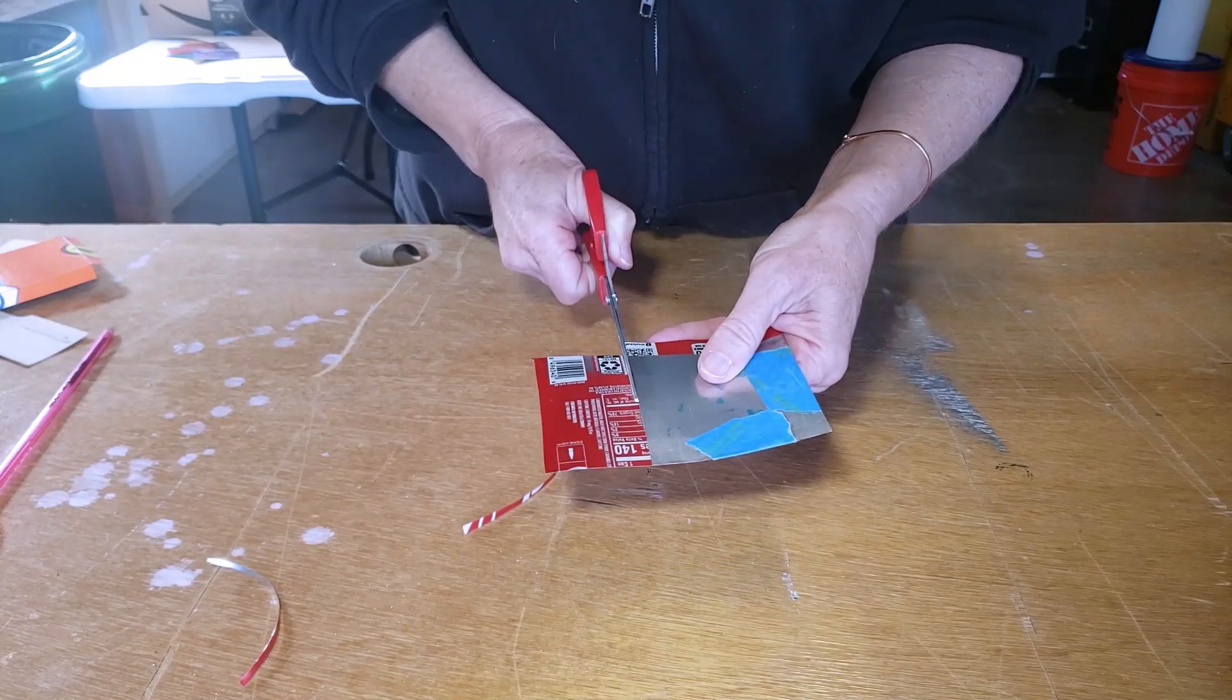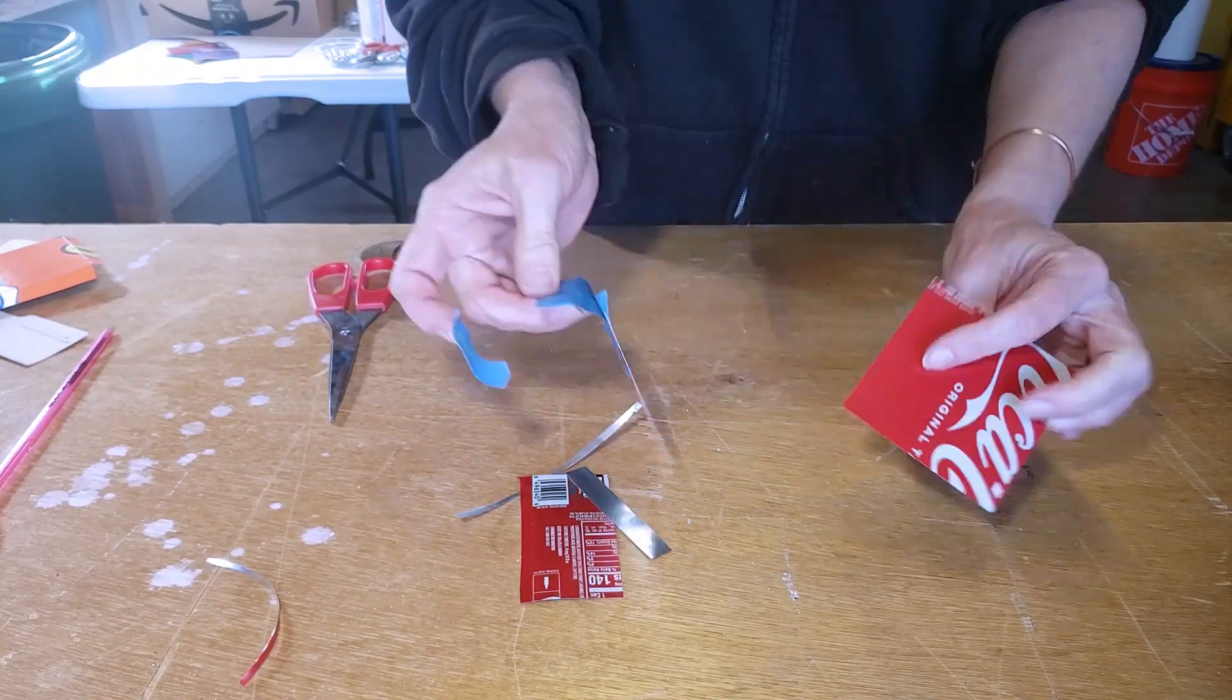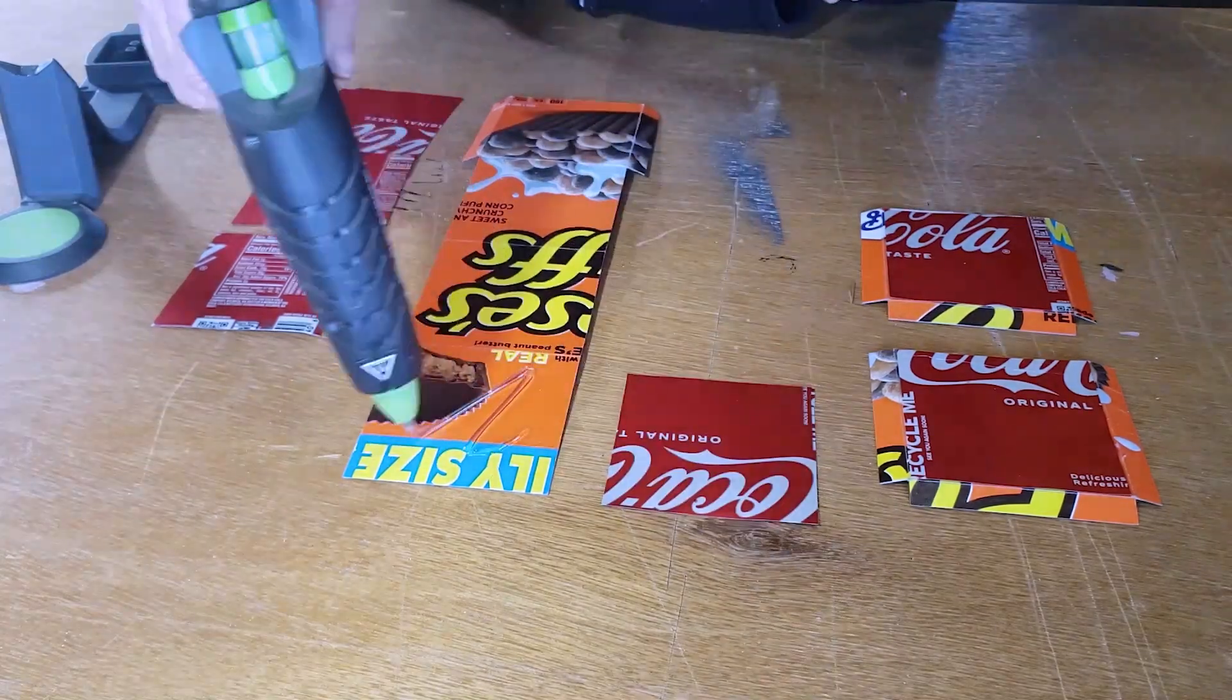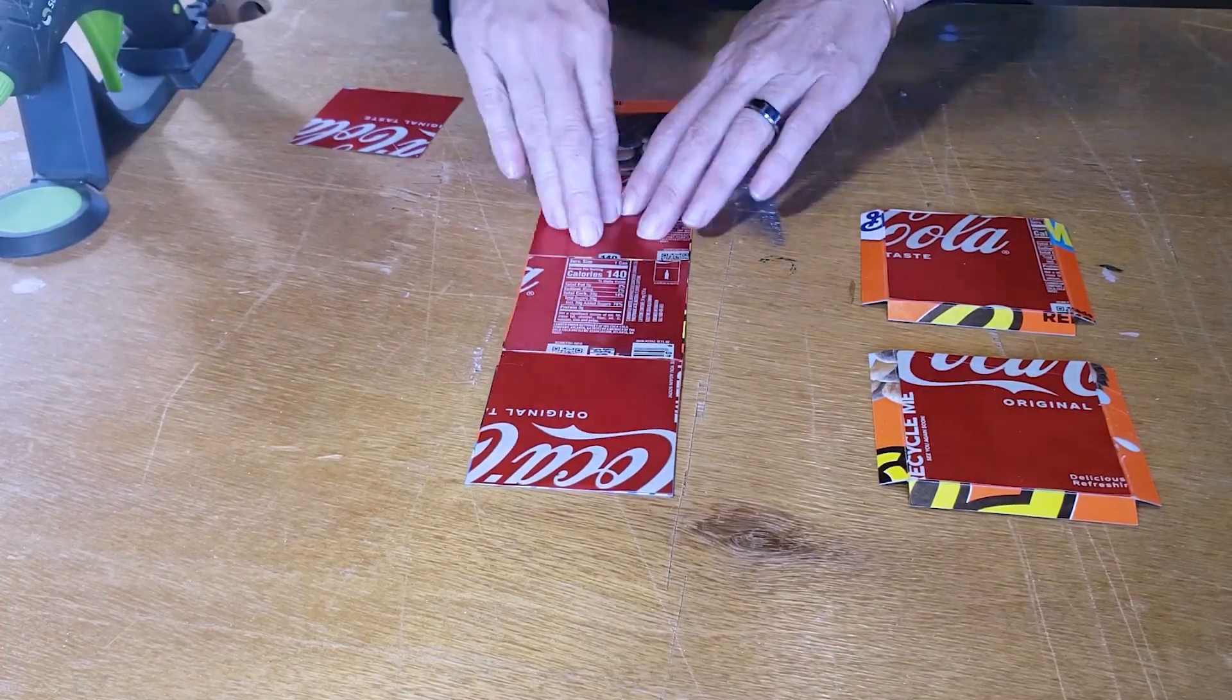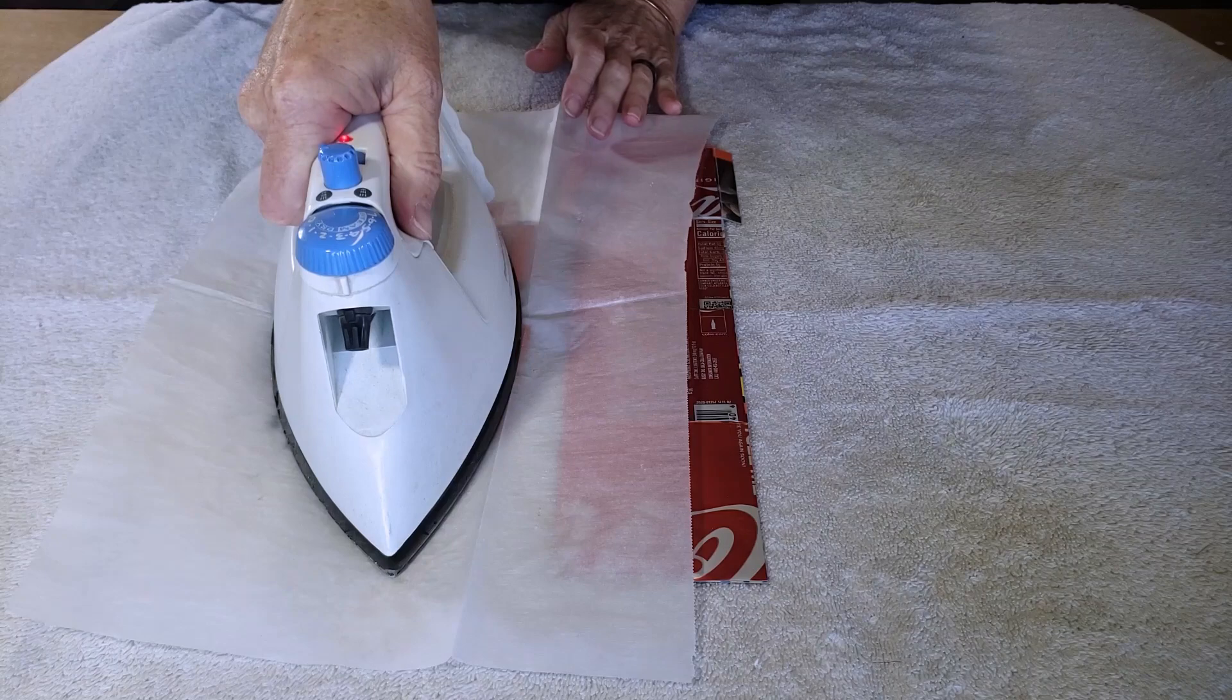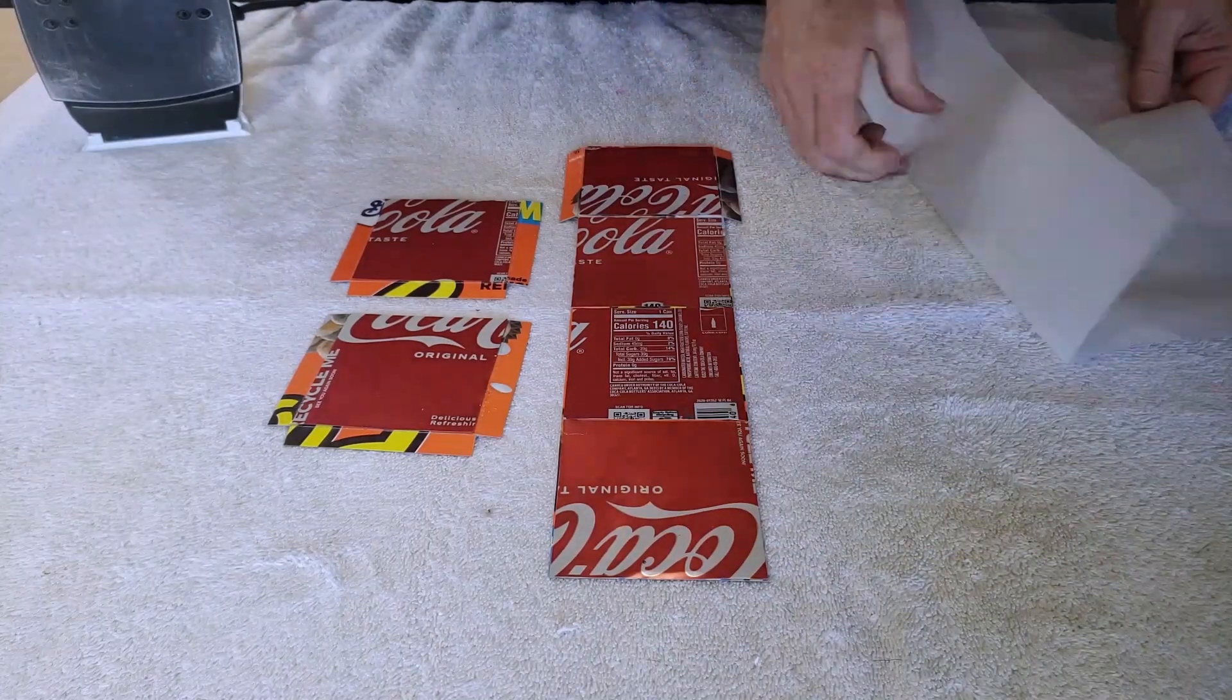And if you need some tips on how to flatten the aluminum I have a video on three different methods for doing that which I will link in the description. I'm using hot glue to attach the aluminum to the cardboard because it's just the fastest way to assemble this box. And I like to press the pieces with a medium hot iron to smooth out the glue a little bit. If you do this you'll want to protect your iron with a piece of parchment paper to keep it from getting any excess glue on it.